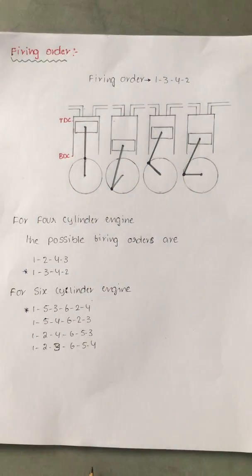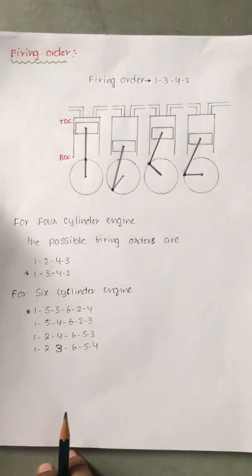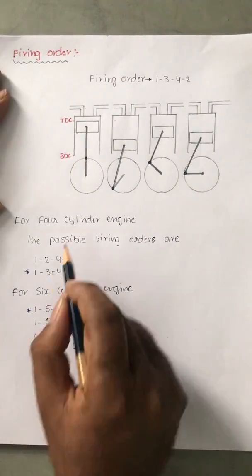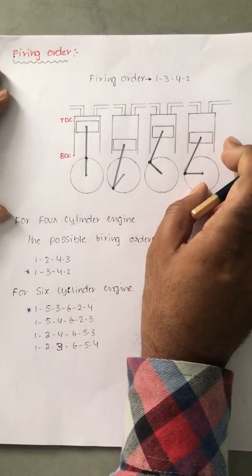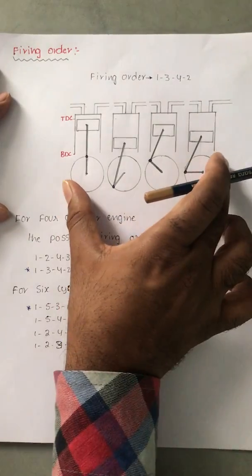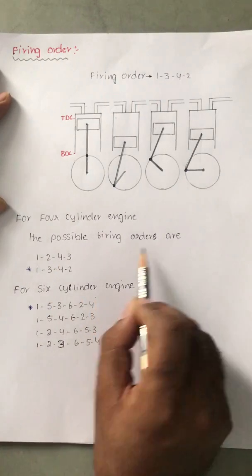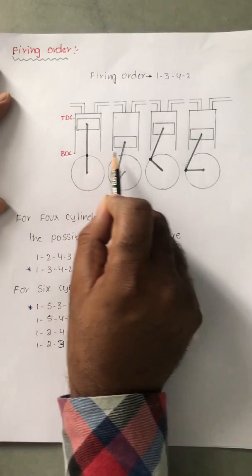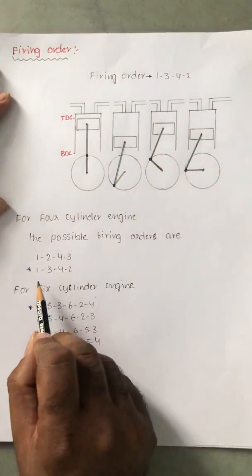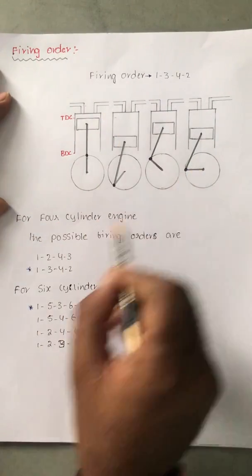This ensures that the power output is uniform and the firing order reduces vibration and protects the crankshaft from damage. For a four-cylinder engine, the possible firing orders are one-two-four-three and one-three-four-two. The commonly used firing order is one-three-four-two.